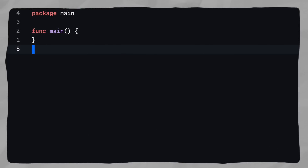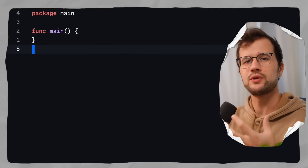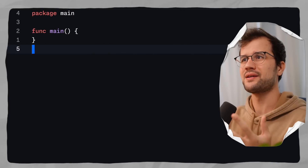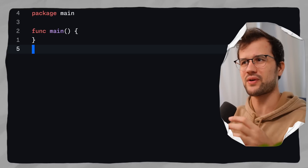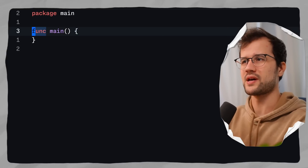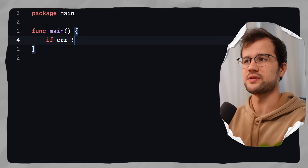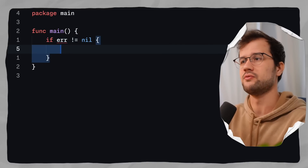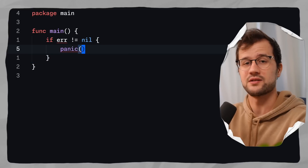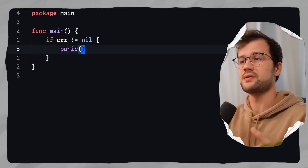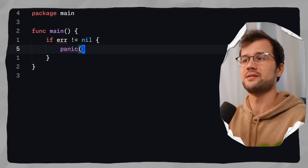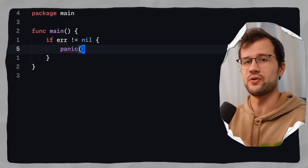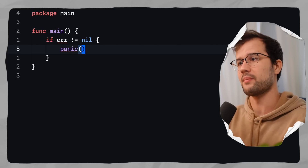There are some advantages and disadvantages, but let's just implement our own must function first. Let's demonstrate what we actually want to reduce, because in Golang itself, this kind of error checking where you always have the same pattern — if error is not equal to nil, then you do some logging, you return or you might panic — stops the program entirely.